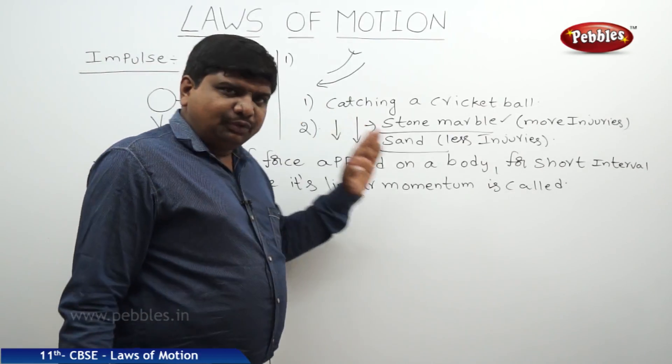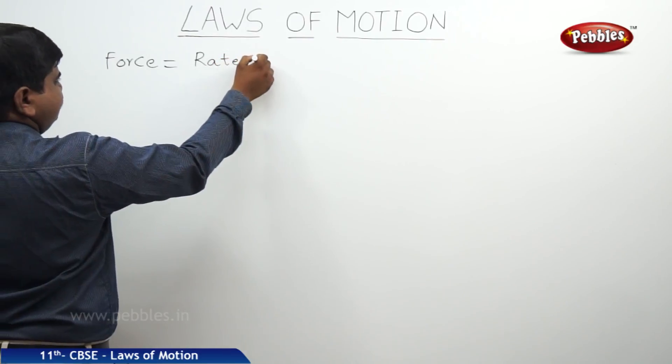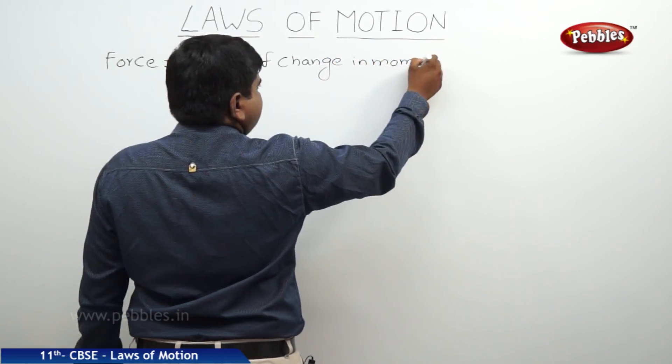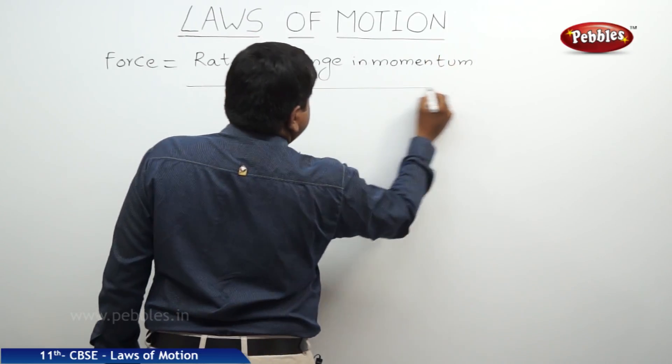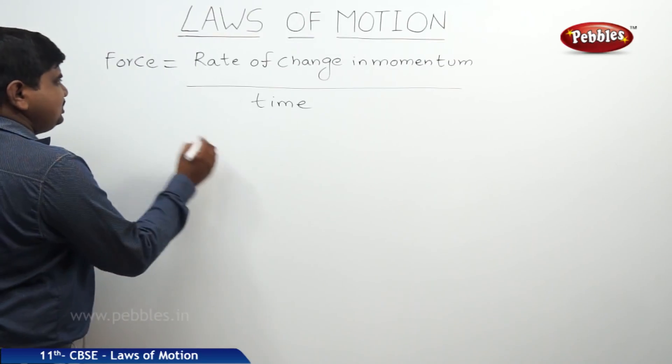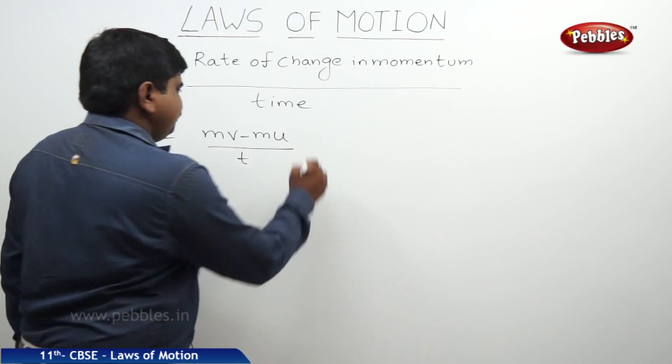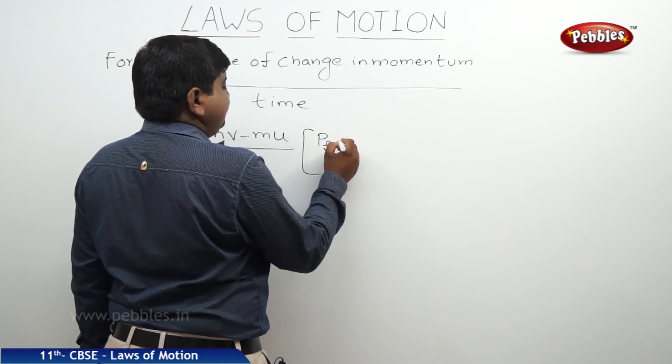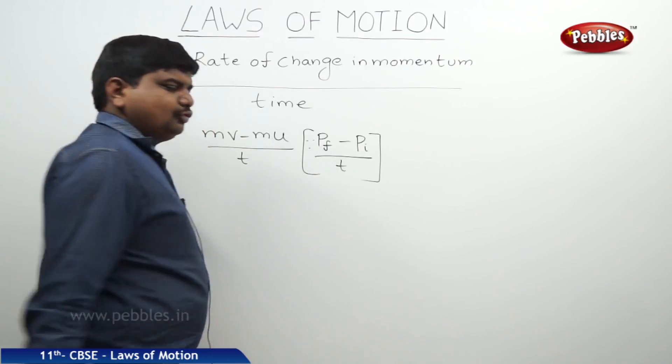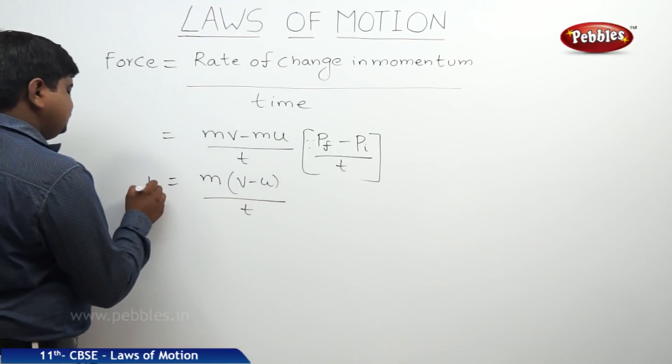So what is the equation? What are its units? Force is equal to rate of change in momentum by time. If the body's velocity is changing from V to U, its change in momentum will be MV minus MU by time, where MV is final momentum and MU is initial momentum. Therefore, if you take M as common, M into V minus U by T is equal to F.